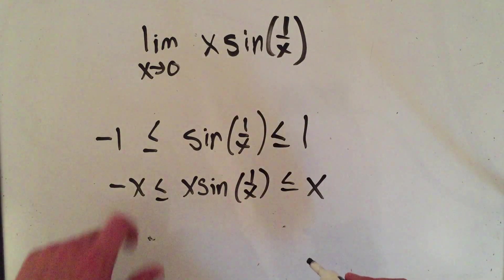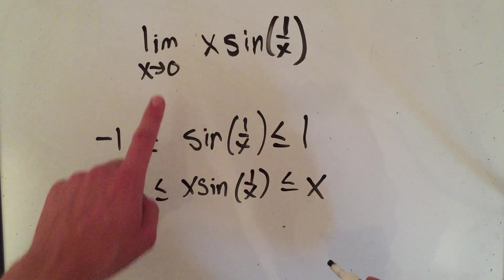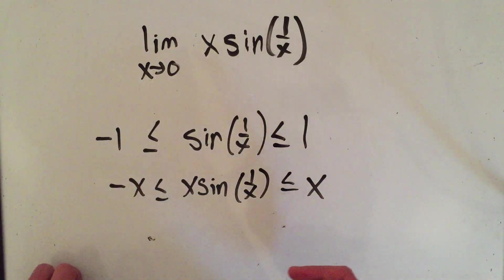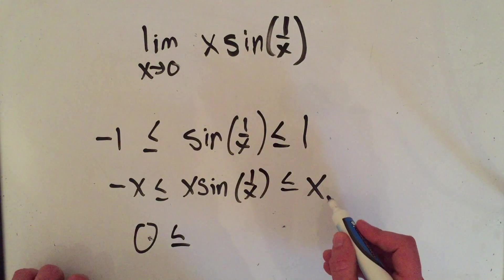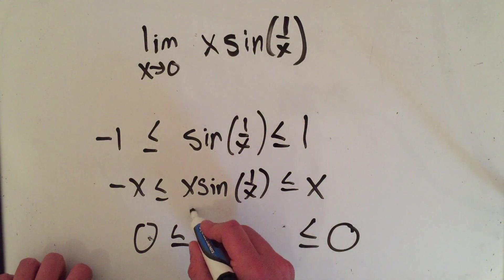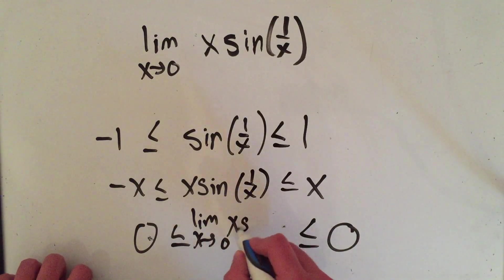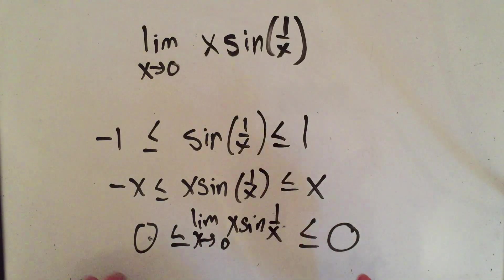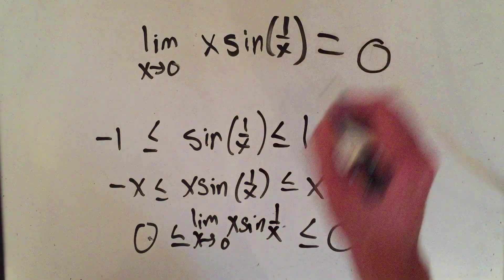and now let me take the limit as x goes to 0 of this entire inequality. So the limit as x goes to 0 of negative x is 0, the limit as x goes to 0 of x is 0, which means that the limit as x approaches 0 of x sine of 1 over x, it's bigger than 0 and less than 0, that means it has to equal 0.